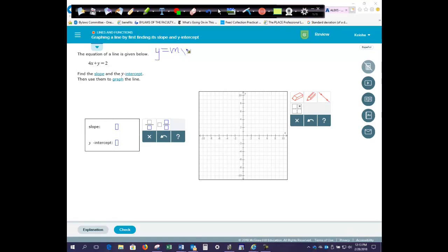So that means we need to solve for y. Our opposite of adding 4x, we're going to subtract 4x on both sides.